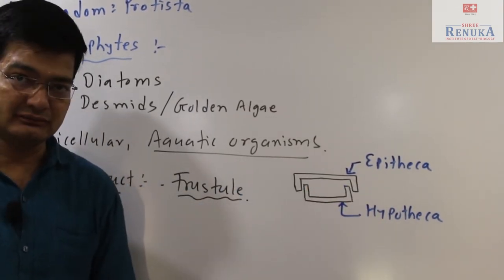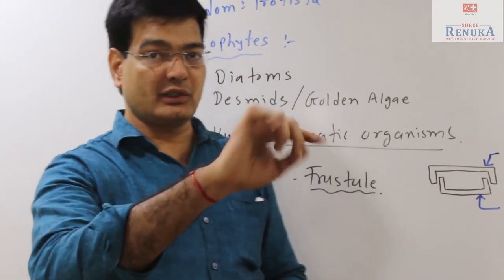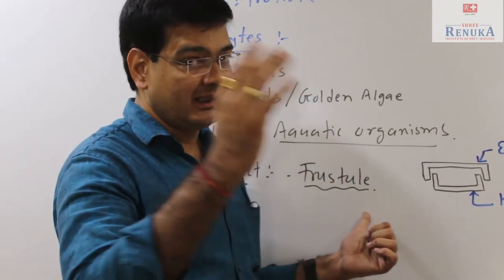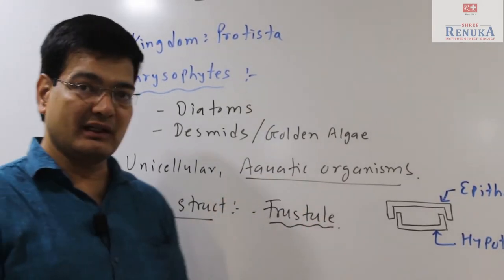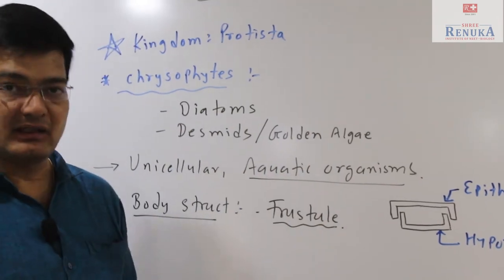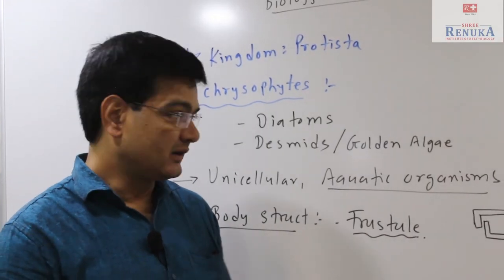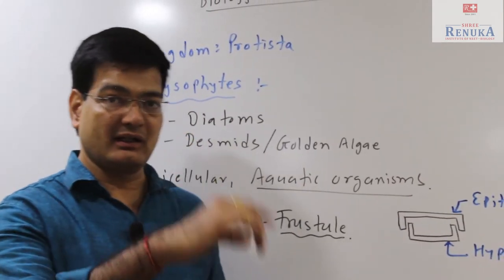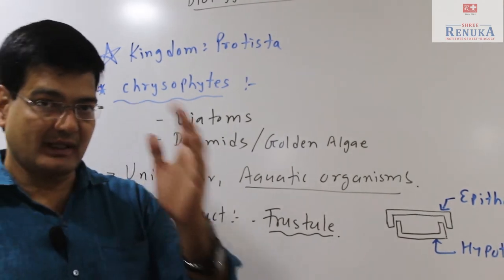The new organism formed needs to produce or develop again the frustule surrounding its body. As it is a unicellular organism, it divides into two by simple cell division or binary fission. But the question is, what about the frustule or the epitheca-hypotheca which is removed by the parental organism?